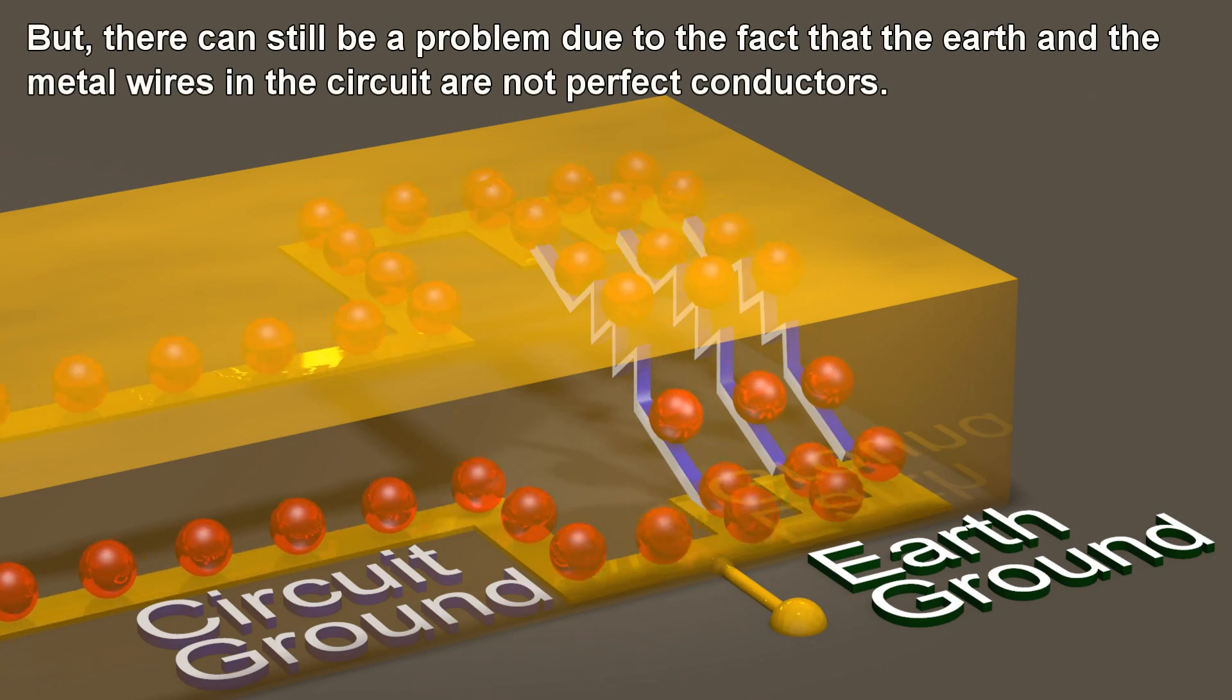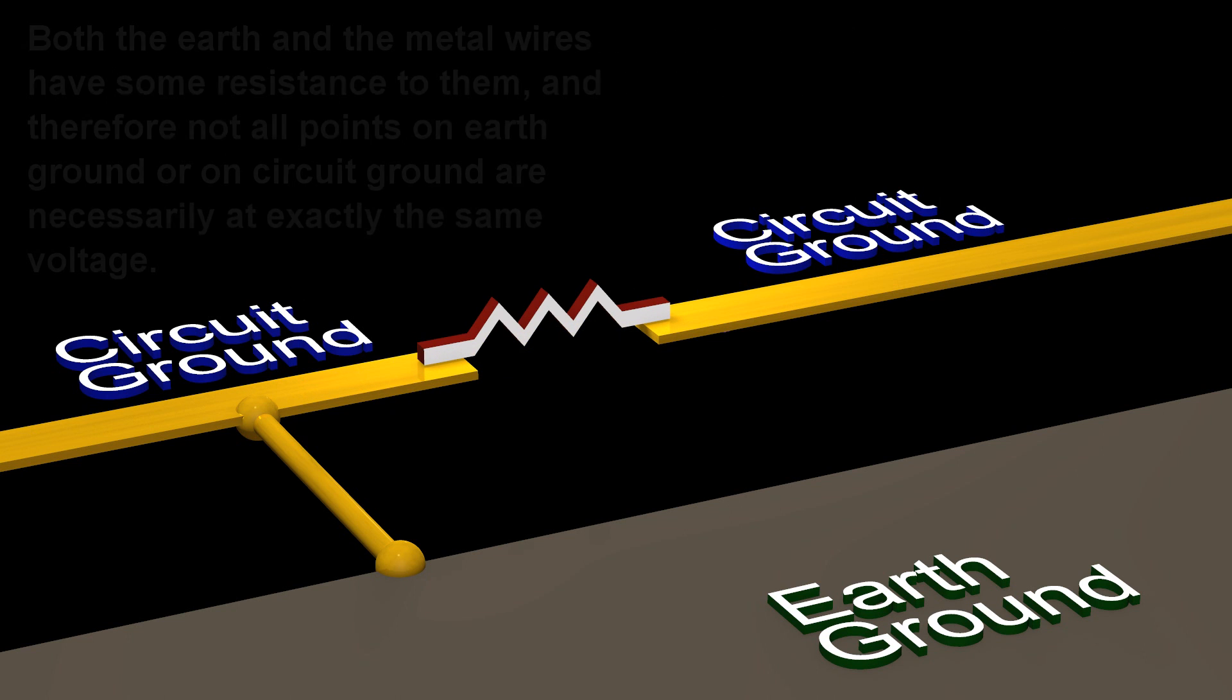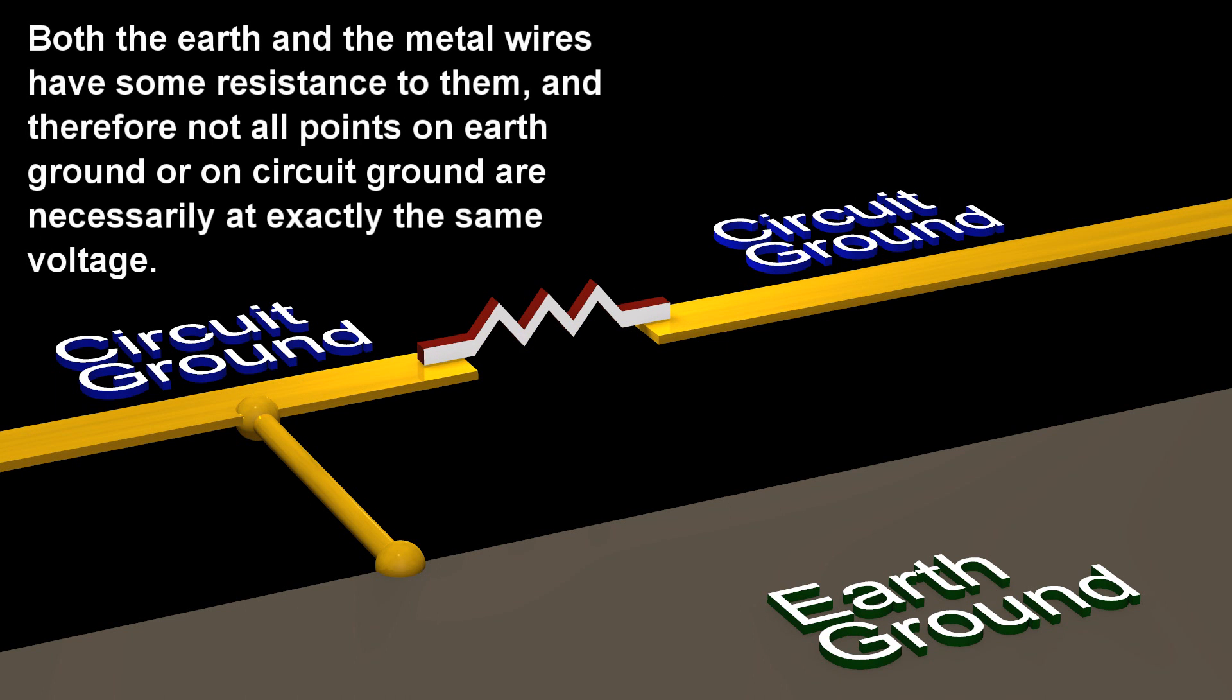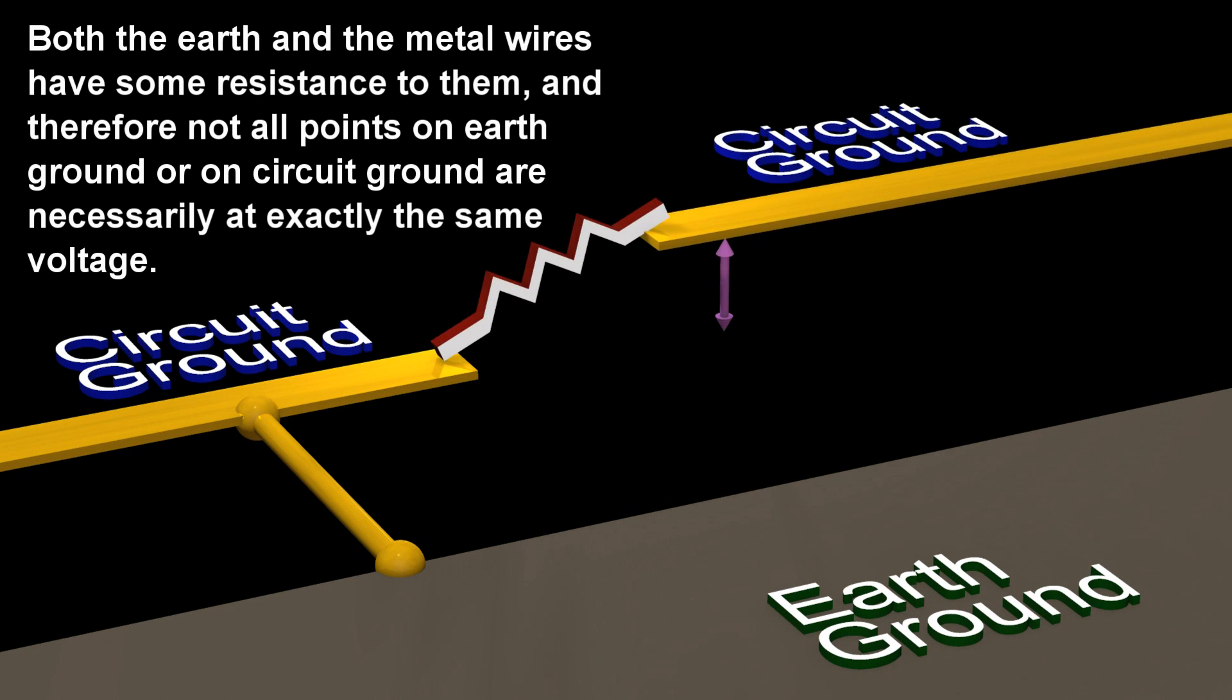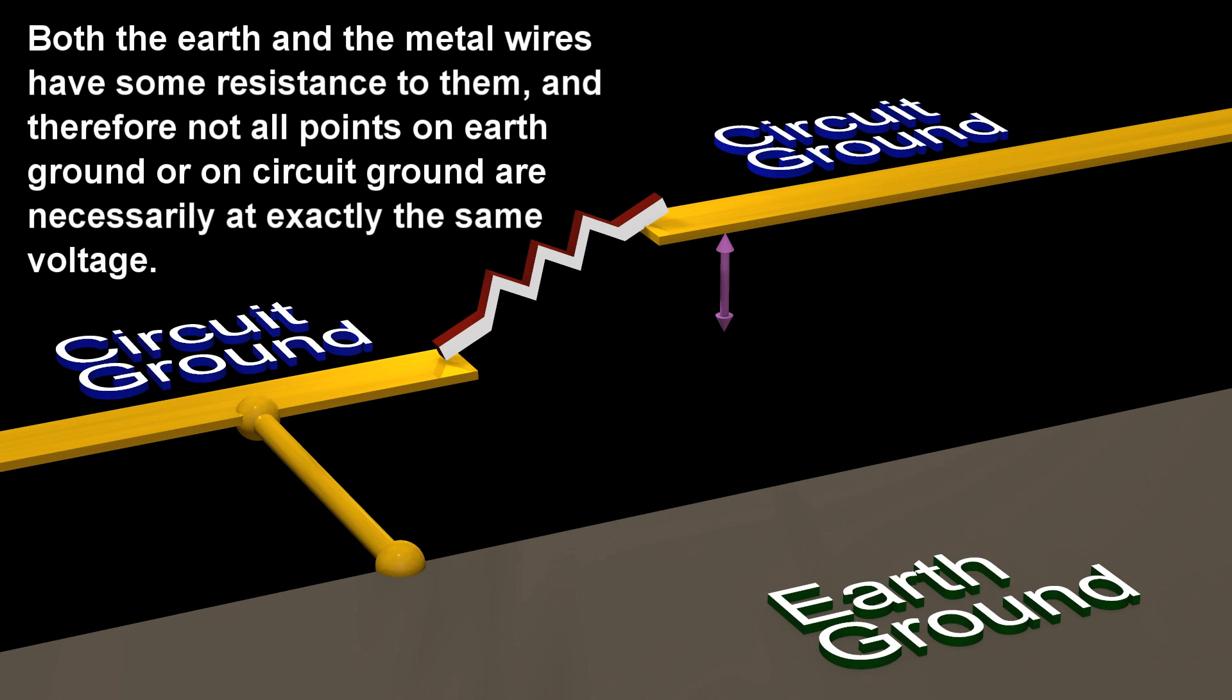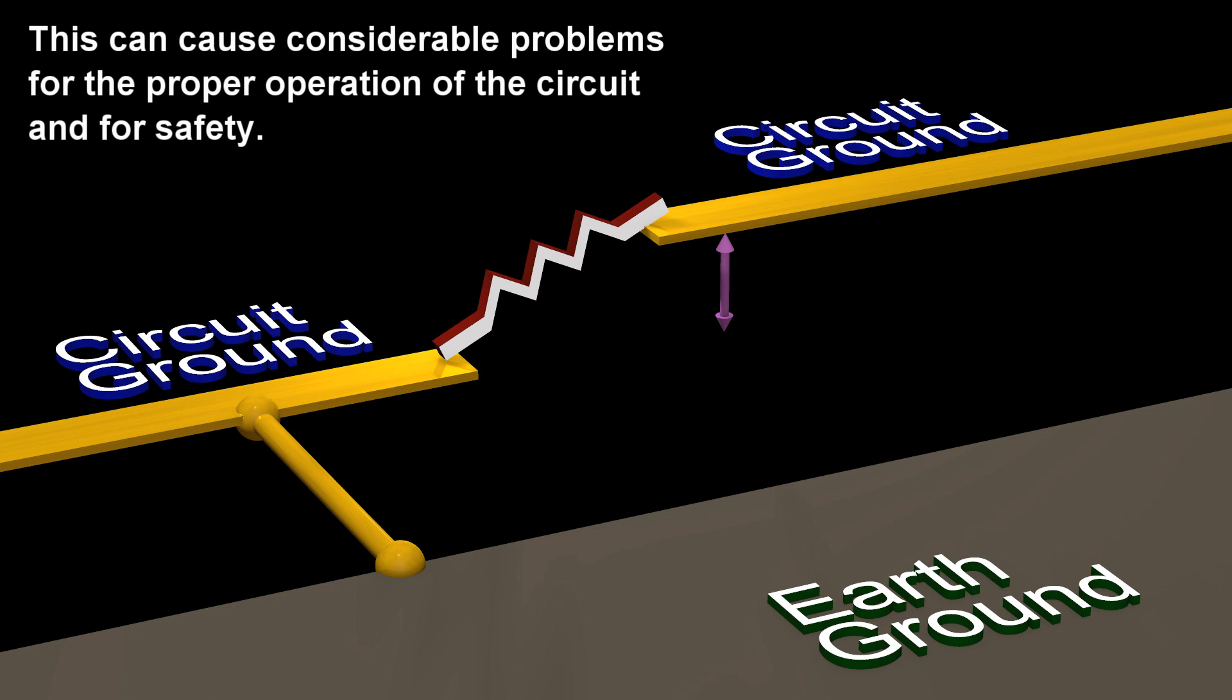But there can still be a problem due to the fact that the earth and the metal wires in the circuit are not perfect conductors. Both the earth and the metal wires have some resistance to them, and therefore not all points on earth ground or on circuit ground are necessarily at exactly the same voltage. This can cause considerable problems for the proper operation of the circuit and for safety.